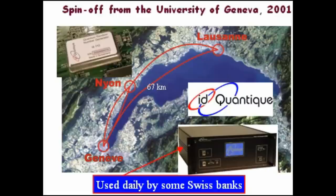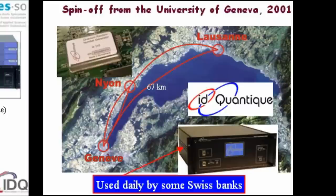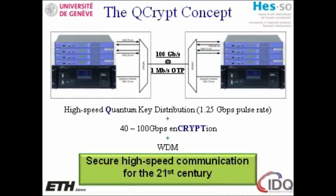The good news is that we already have some customers who take this seriously. There are also some limitations: first of all, this box only produces a key that then has to be used for cryptographic applications. So the complete system looks a bit more complicated — you have the Alice and Bob black boxes that produce keys, which are then used by the blue boxes. The blue boxes are encryptors, classical boxes that just do encryption, coming from a company called Senetas in Australia.